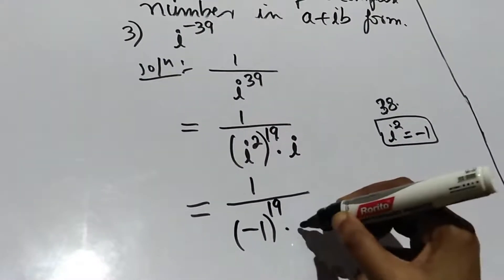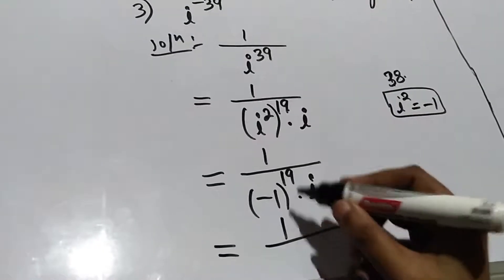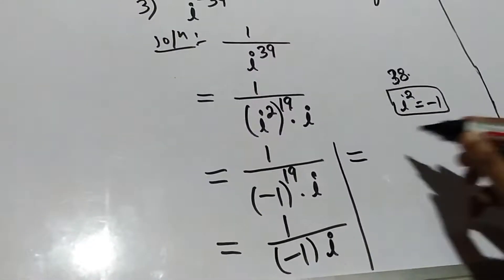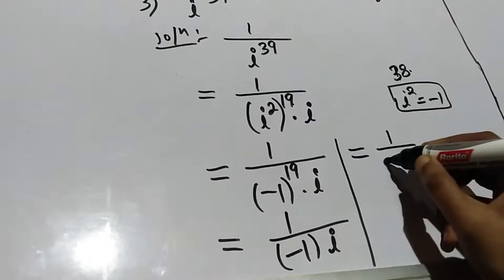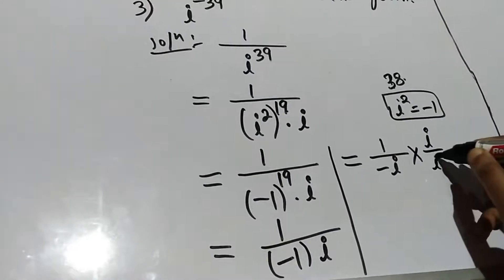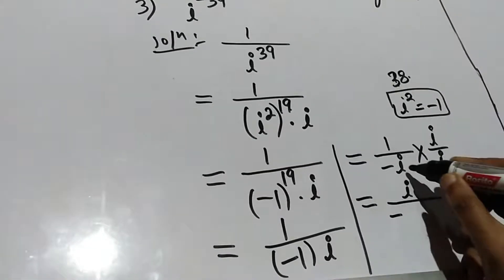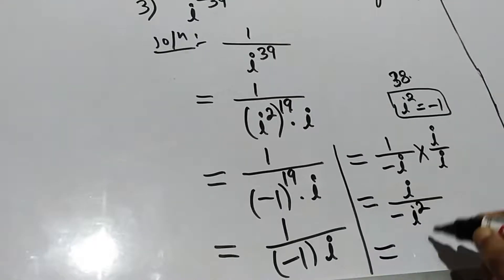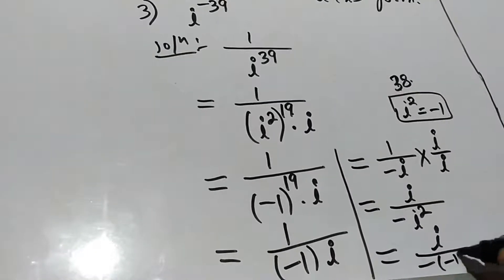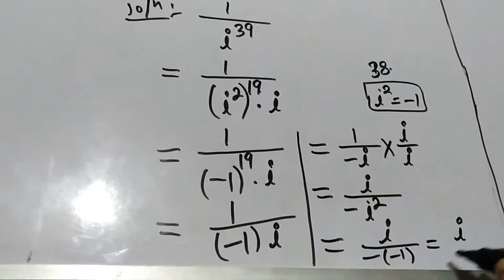Since 19 is an odd number, minus 1 to the power 19 equals minus 1. Therefore we get 1 divided by minus 1 times i, which equals 1 divided by minus i. Now we multiply and divide by i: i divided by minus i times i equals i divided by minus i squared. Since i squared equals minus 1, we get i divided by minus times minus 1, which gives i divided by 1.